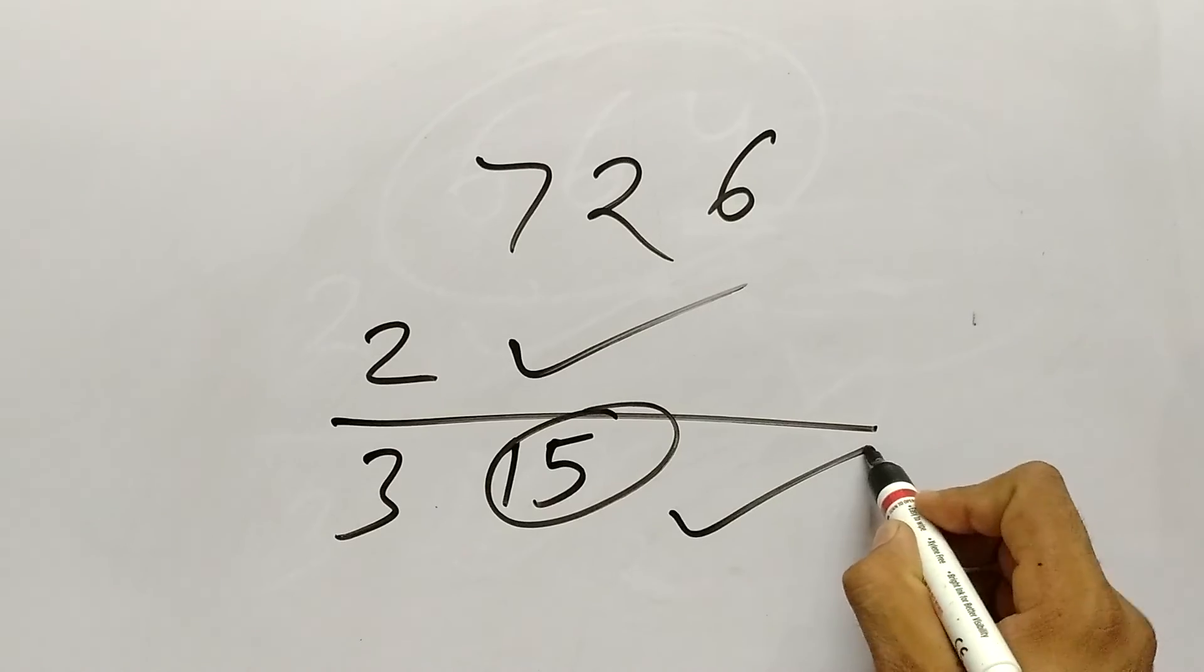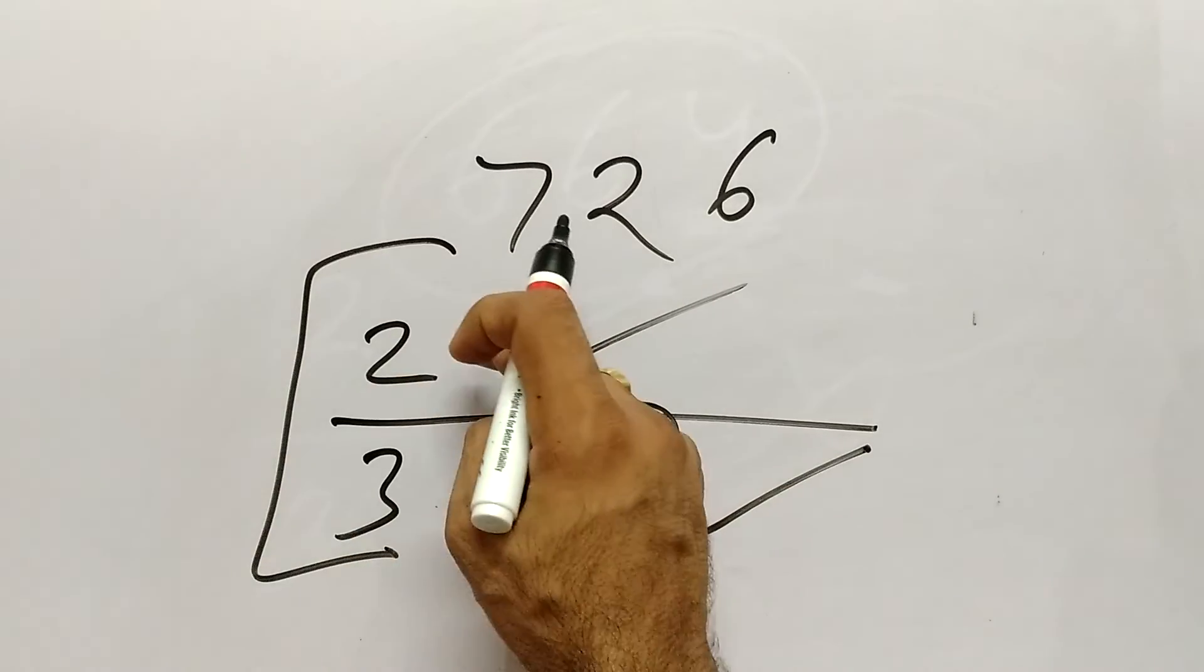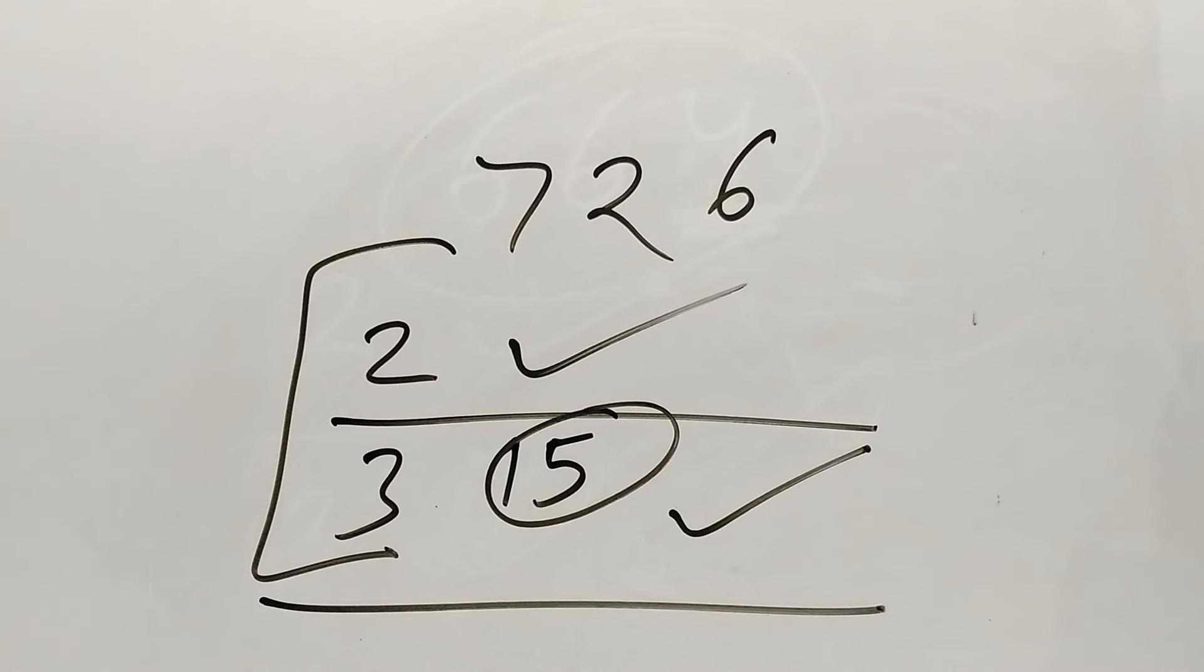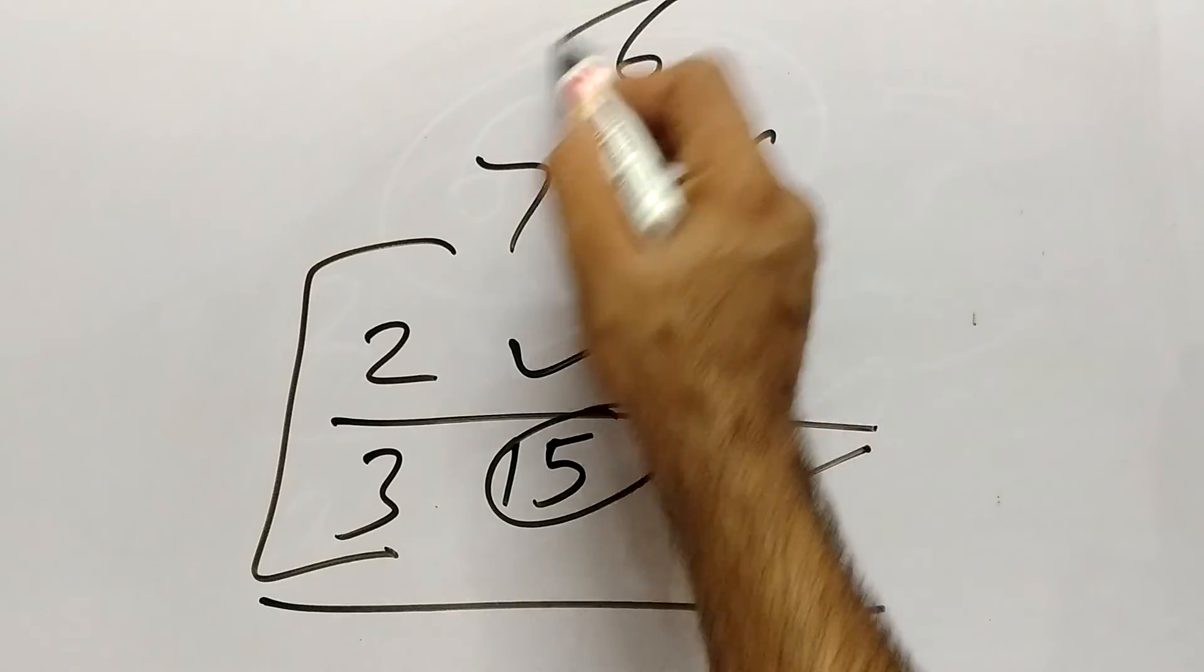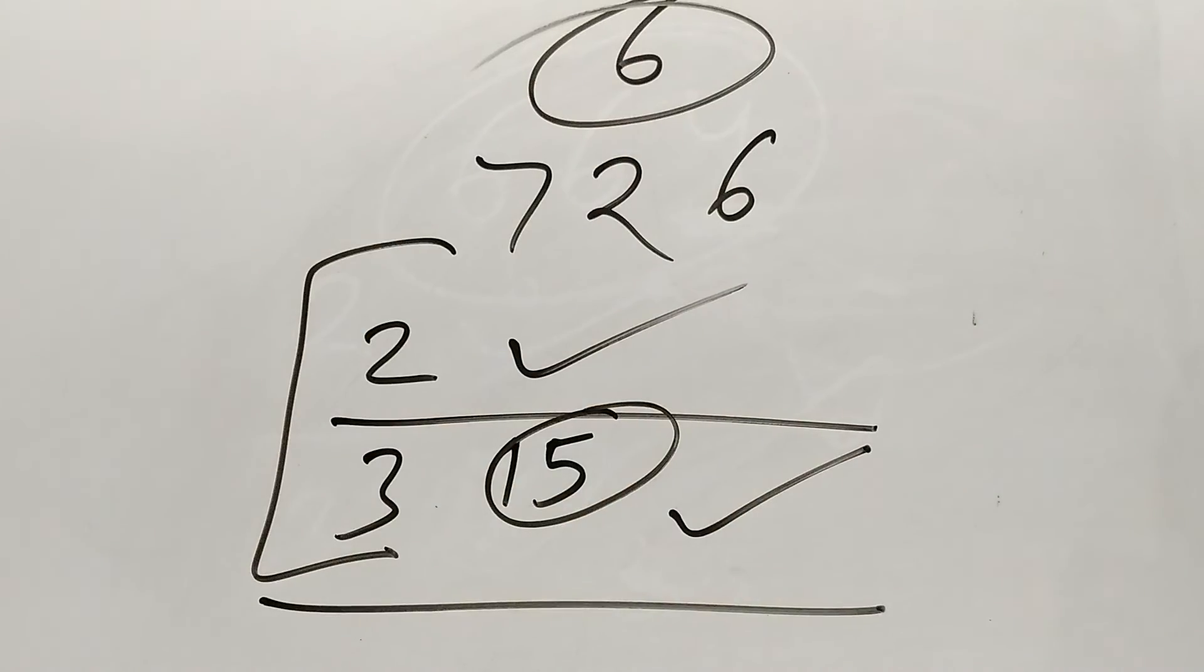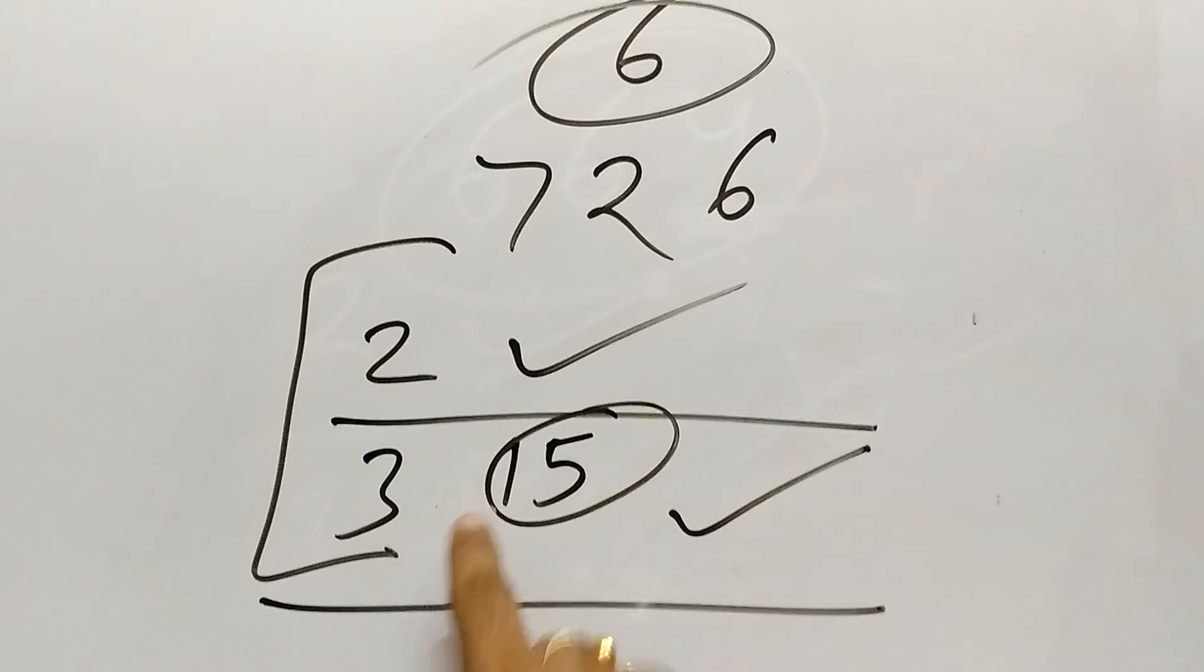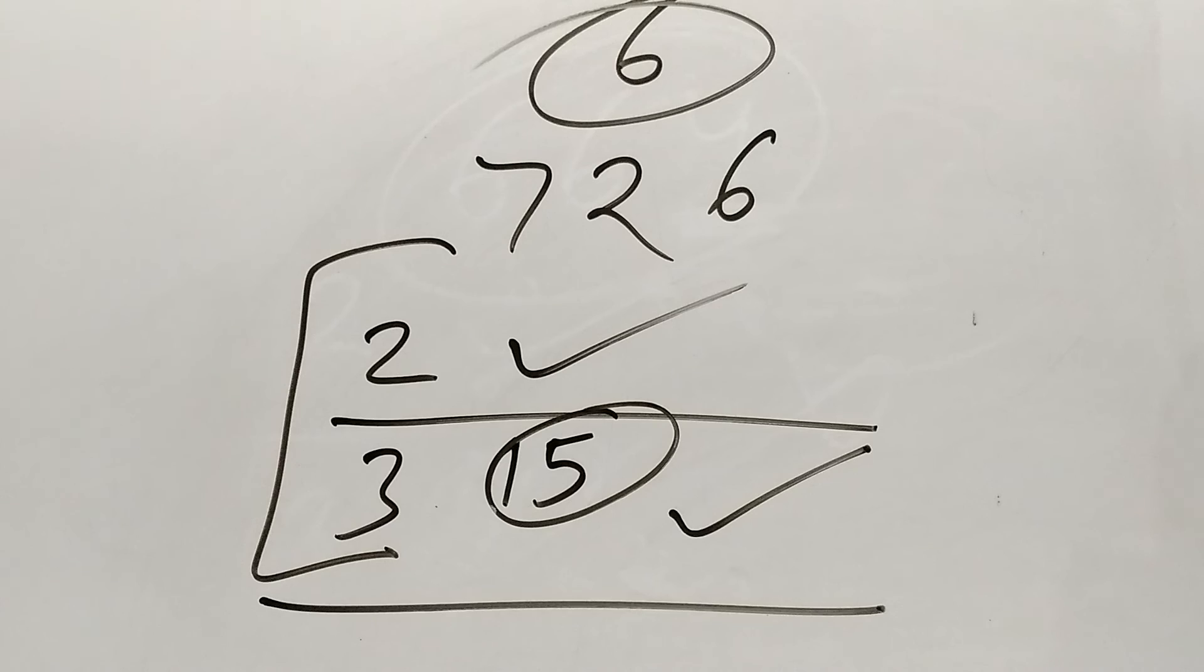So we can say that it is exactly divisible by 2 and 3. So I hope now you can find the divisibility for 6. Koi bhi number de rakha hoga, aap bata denge ki ye number 6 se divisible hai ya nahi by checking the divisibility of 2 and 3. I hope you like this video. Share this video among your friends so that they can learn the divisibility rule for 6. Thank you so much.